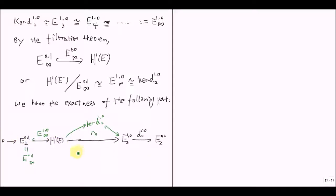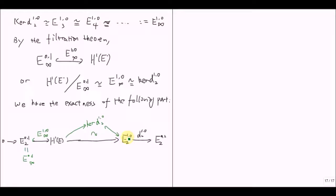So we have proved the exactness there. How about the exactness at E¹⁰∞? Actually this is trivial, because the kernel of this map is precisely this object, and this is an epimorphism. So the image of this arrow is precisely the kernel, and since the other map is a monomorphism, it doesn't change this image. So the kernel of this equals the image of that.